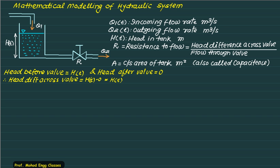The head before the valve is H(t) and head after the valve there is no head here because water is discharged directly into atmosphere. So that equals to zero. That is why the head difference across the valve is H(t) minus zero. That itself is H(t).